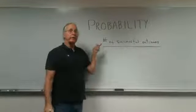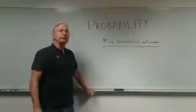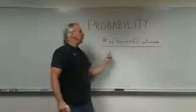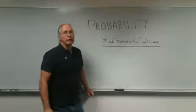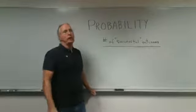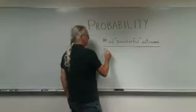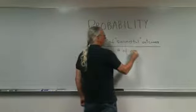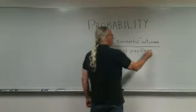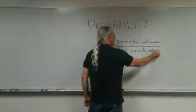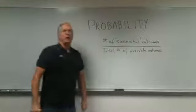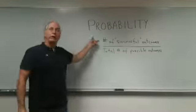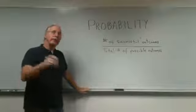So that's the numerator of the fraction. The number on top is the number of successful outcomes. The denominator or the number on the bottom of the fraction is the total number of possible outcomes. So probability is a fraction: numerator is the number of successful outcomes or the number of ways to be successful, and the denominator is the total number of possible outcomes.